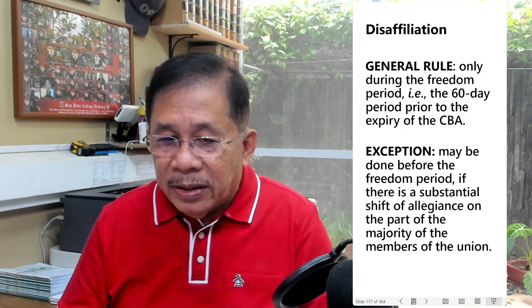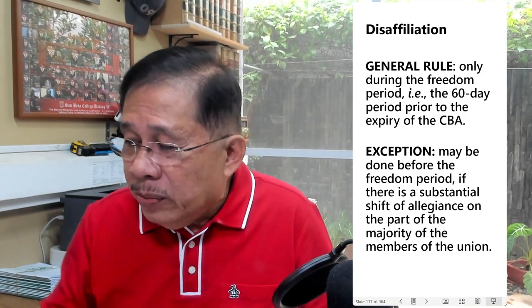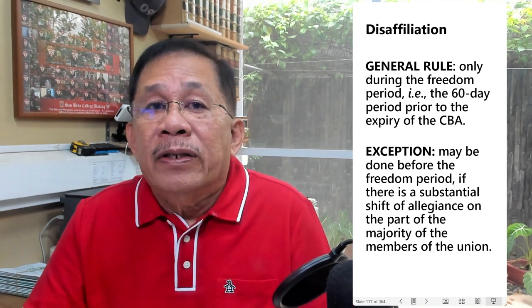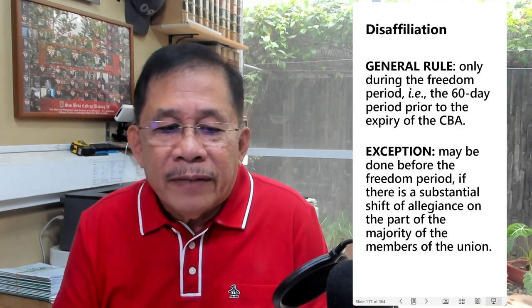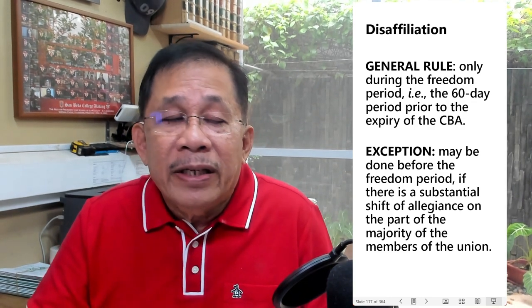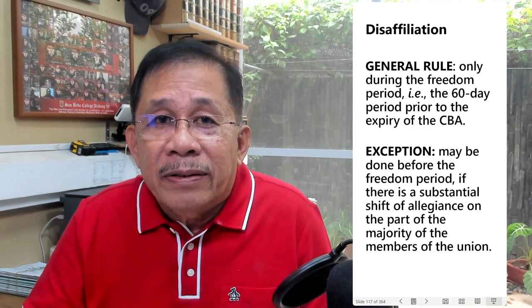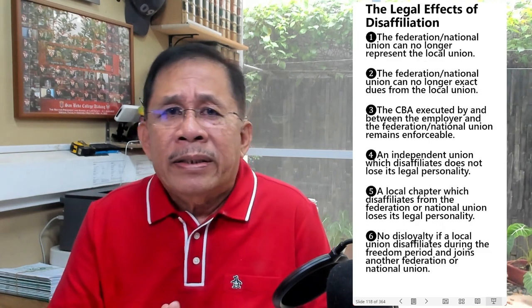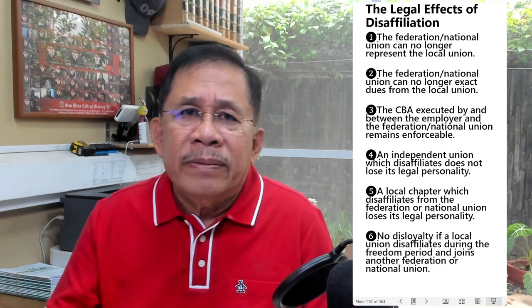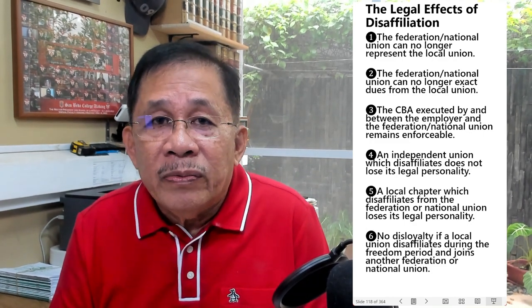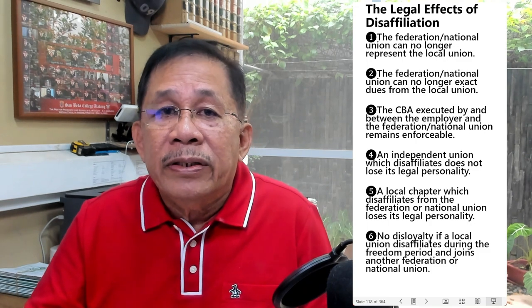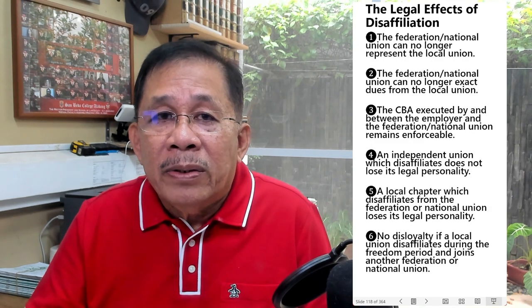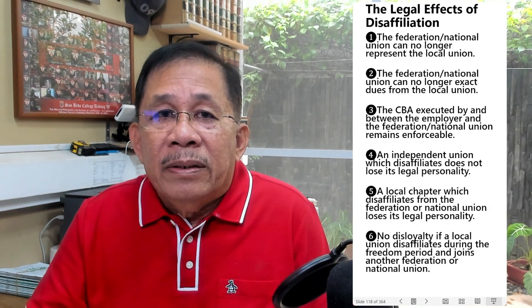As a rule, a local union can disaffiliate from the mother federation only during the freedom period. Exceptionally, disaffiliation may be done before the freedom period if there is a substantial shift of allegiance on the part of the majority of the members. The first legal effect of disaffiliation is that the relationship between the local union and the federation is severed, and therefore the federation is divested of the power to represent the local union.